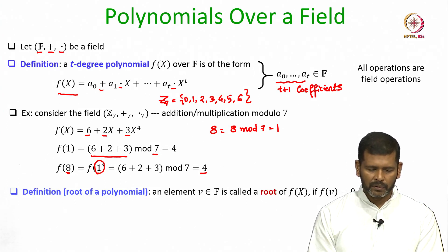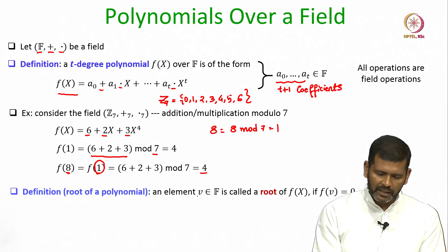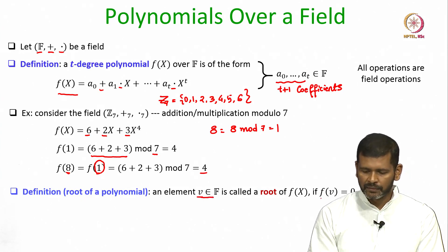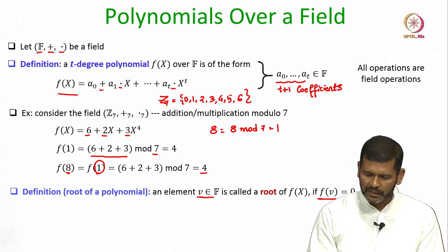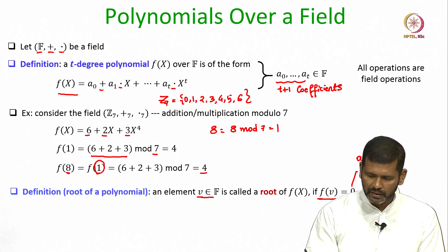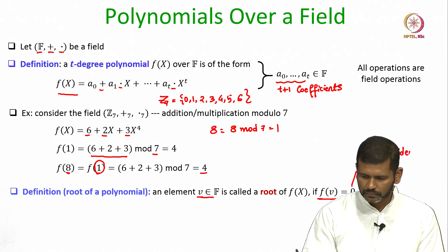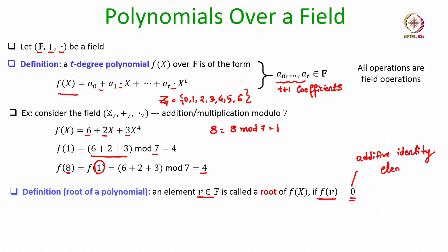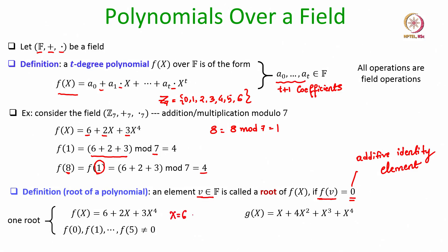Next we define the root of a polynomial over a field. An element v from the field is called the root of the polynomial if the value of the polynomial at x=v turns out to be the additive identity element, which is 0. For instance, the polynomial f(x) has only one root, x=6, whereas the polynomial g(x) has 4 roots: x=0, x=1, x=2 and x=3.